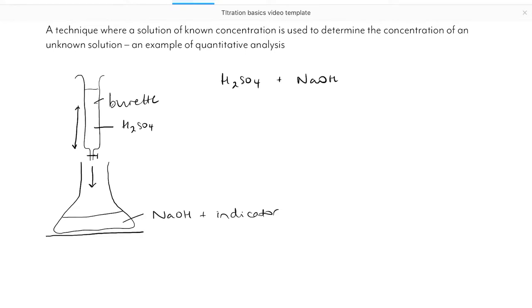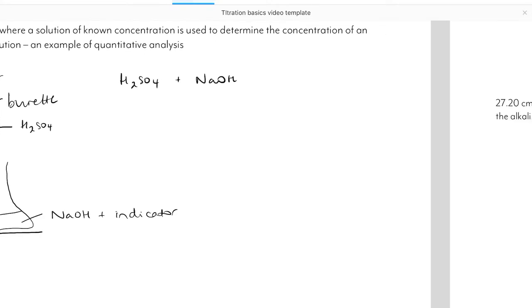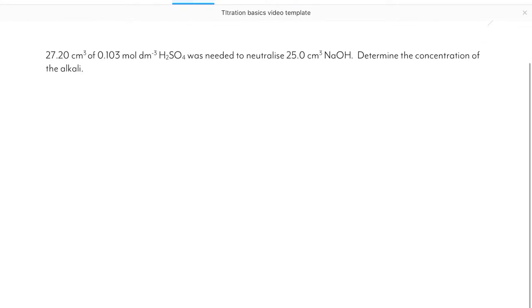Let's have a look at a typical acid-base titration calculation. We have 27.2 cm³ of the acid required to neutralize 25 cm³ of the alkali. The first thing we're going to need, as always, is a balanced equation.